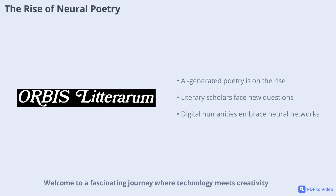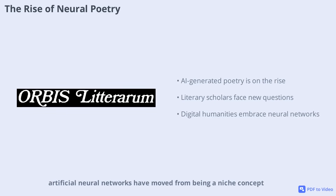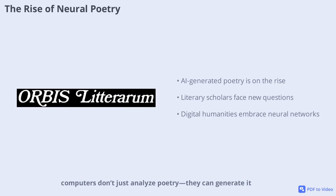Welcome to a fascinating journey where technology meets creativity. In recent years, artificial neural networks have moved from being a niche concept to a powerful tool that's reshaping how we think about literature. Today, computers don't just analyze poetry — they can generate it. But what does this mean for the world of literature?